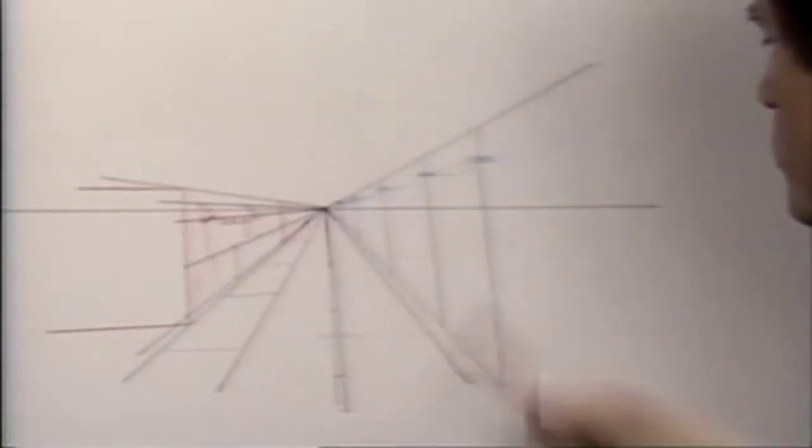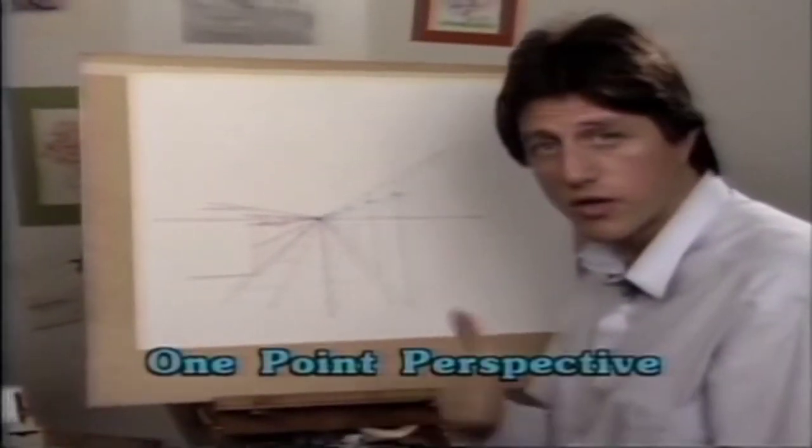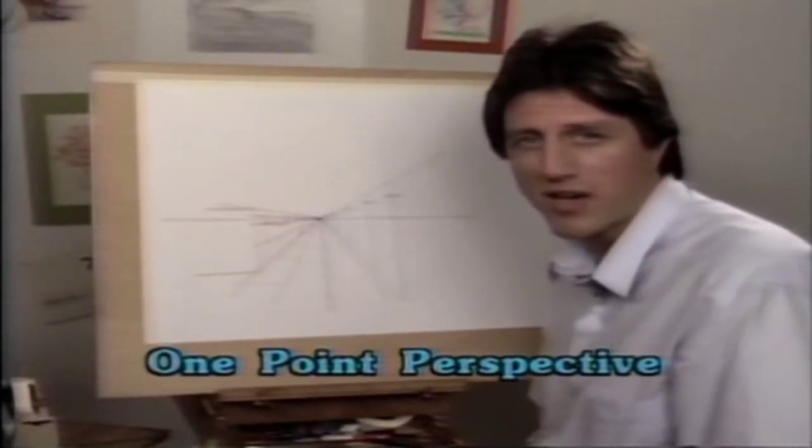He's selling hot dogs along the side of the road using the same vanishing point. With one vanishing point, this is an example of one-point perspective.